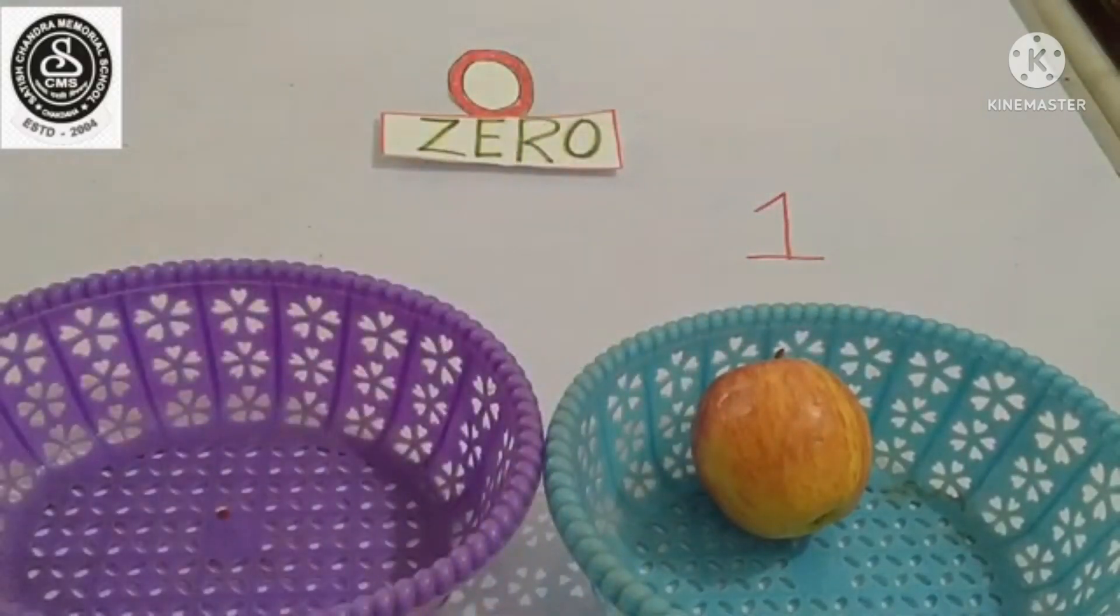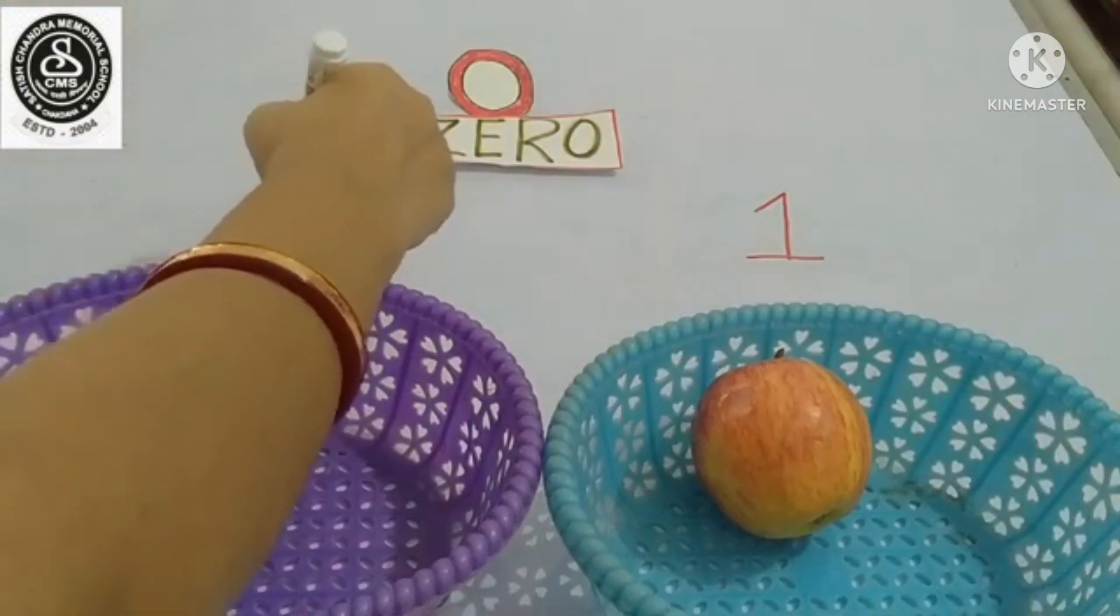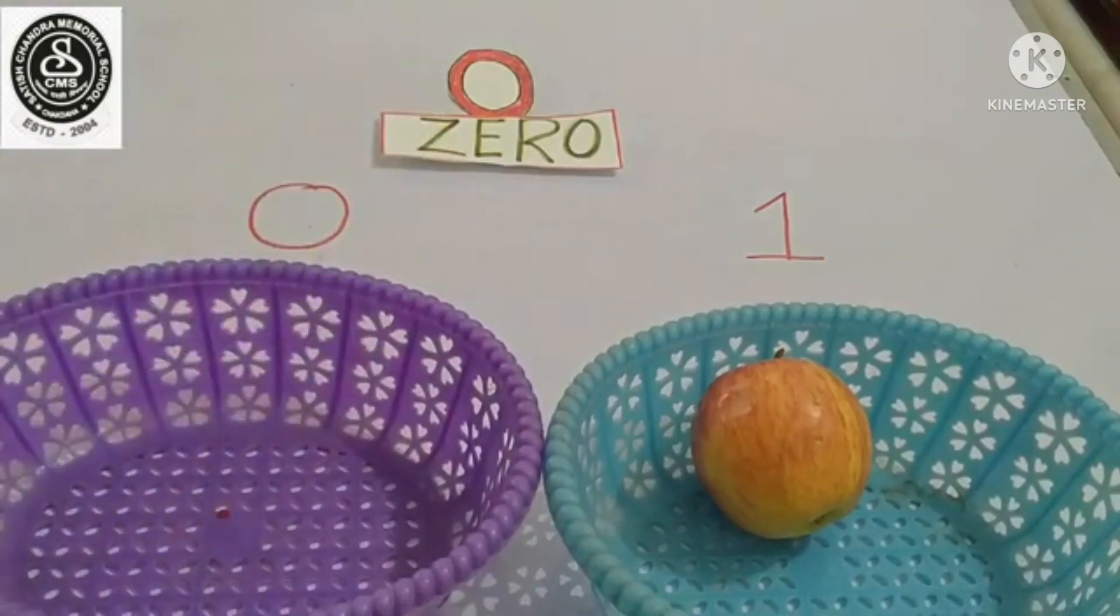And then, see this basket? Is there anything? Nothing is there. So, what should I write? Yes, nothing is there. So, nothing means I have to write here zero. Zero means nothing.